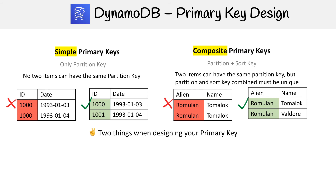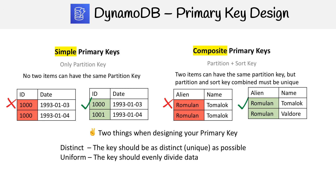There are two things to keep in mind when designing your primary key. You want them to be distinct — the key should be as unique as possible. And you want the keys to evenly distribute data amongst partitions. This is especially important with the composite key, because when you group things based on the partition key, you want that to be as unique as possible, so it's more even. You don't want 90% of your records being one thing and 10% being another — you want it as even as possible.